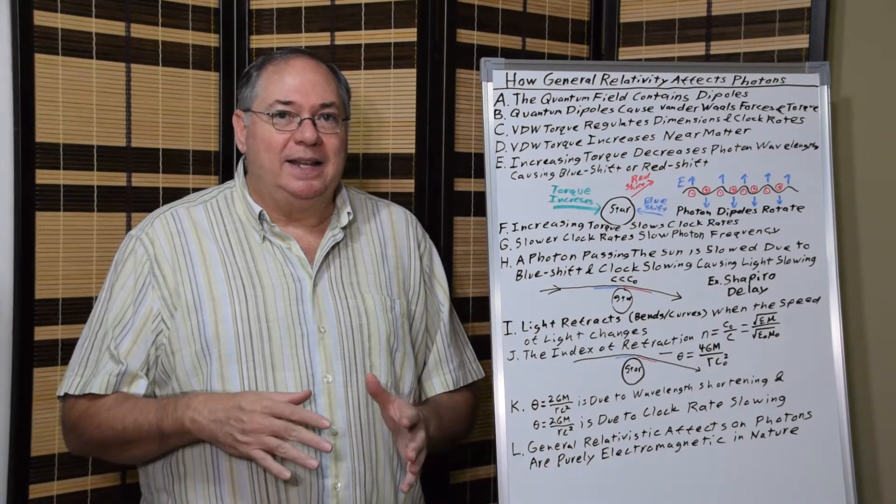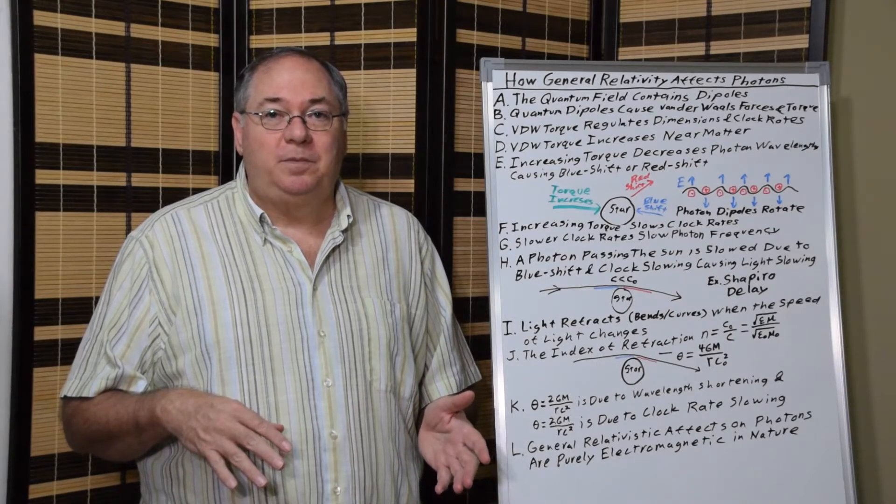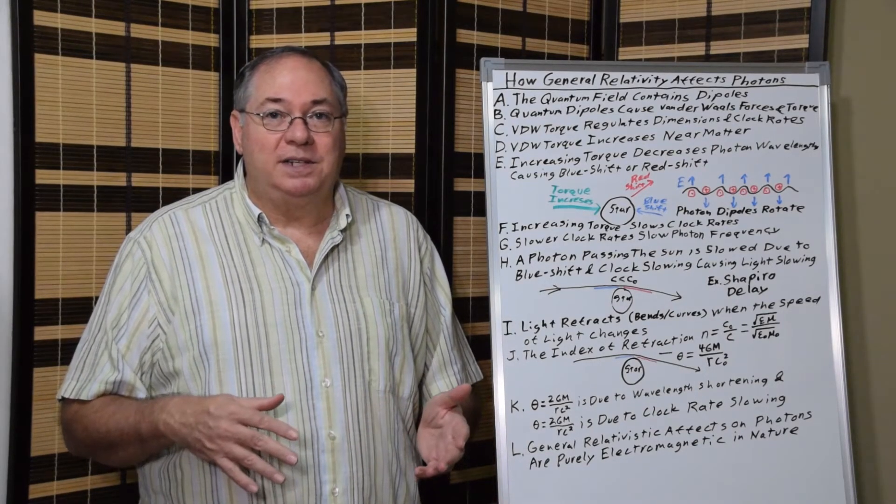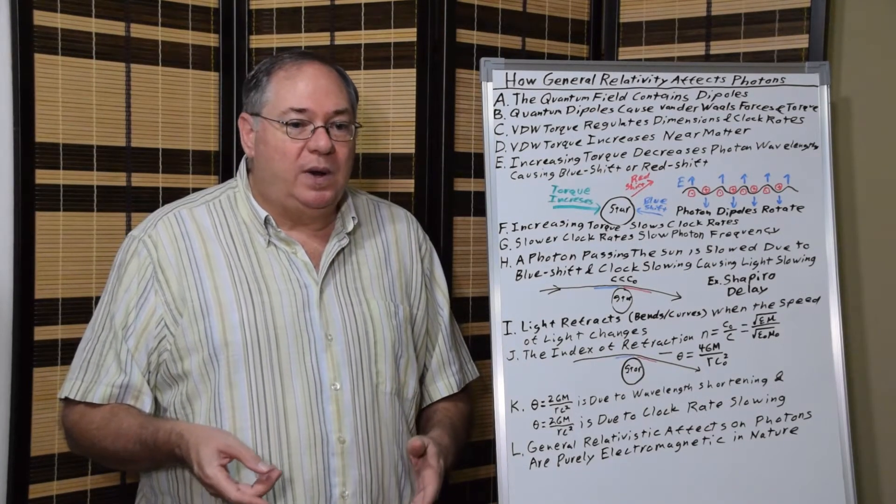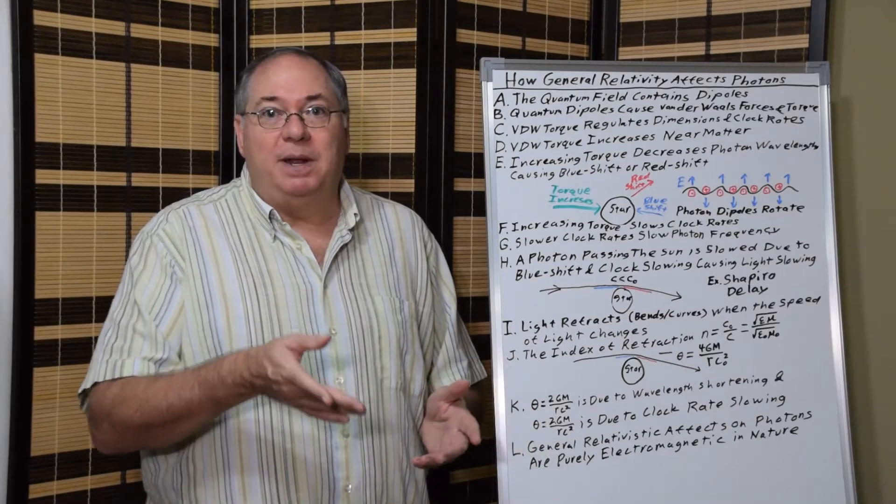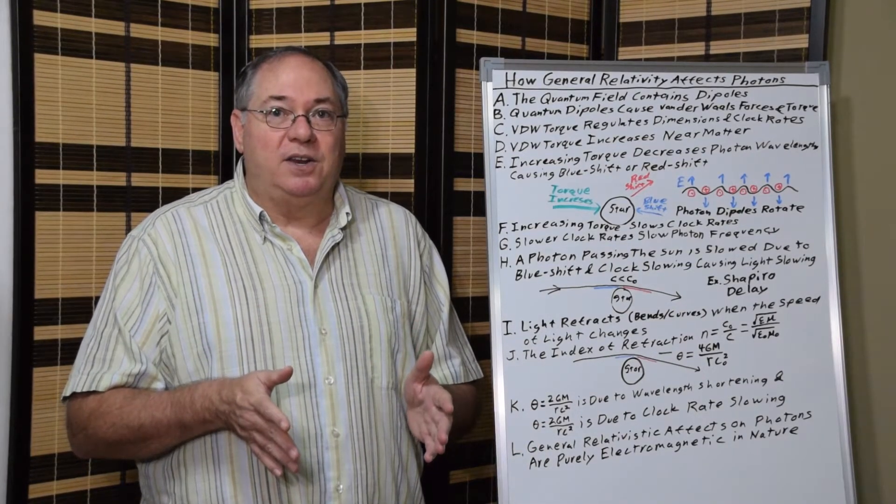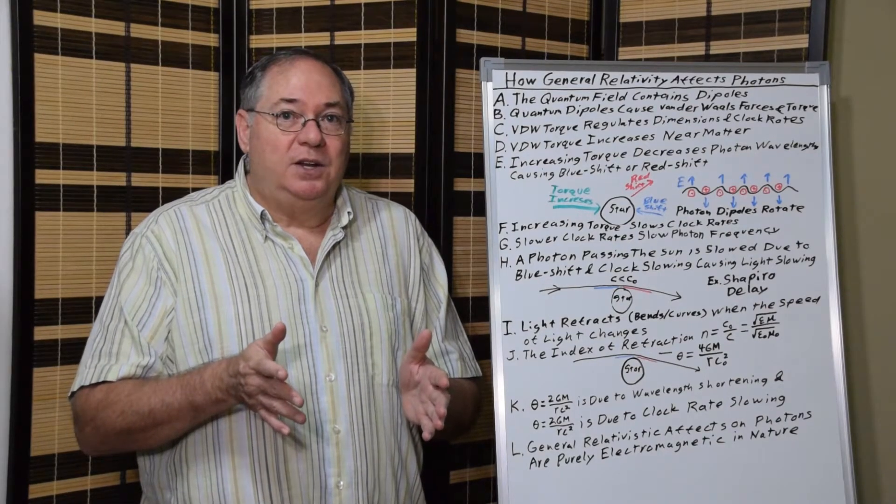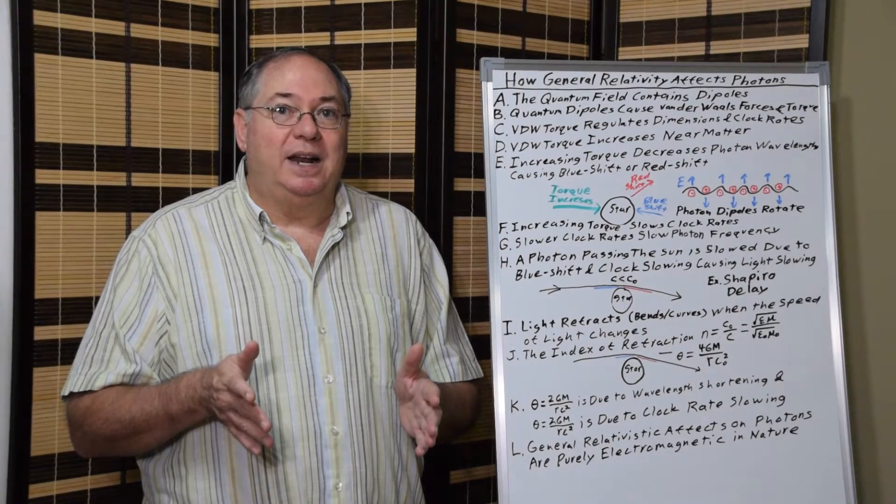He decided that the speed of light had to be constant rather than variable, while in electromagnetic general relativity, the speed of light varies. So when you're dealing with light bending, you're dealing with the actual wavelength contraction being a real shortening of the wavelength of the photon and not a shortening of the space.